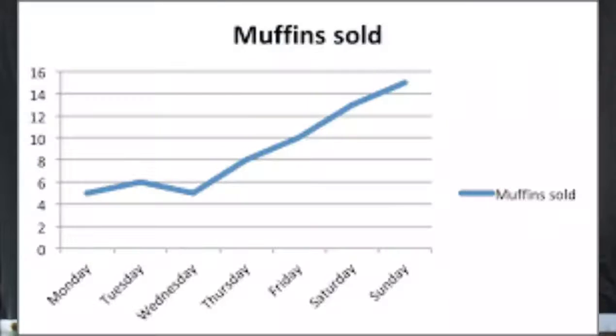Now let us try to understand the different types of line graphs. A simple line graph is a line graph that focuses on the data of a single subject. This type is often seen in businesses launching a new product or in presentations used in stock marketing.